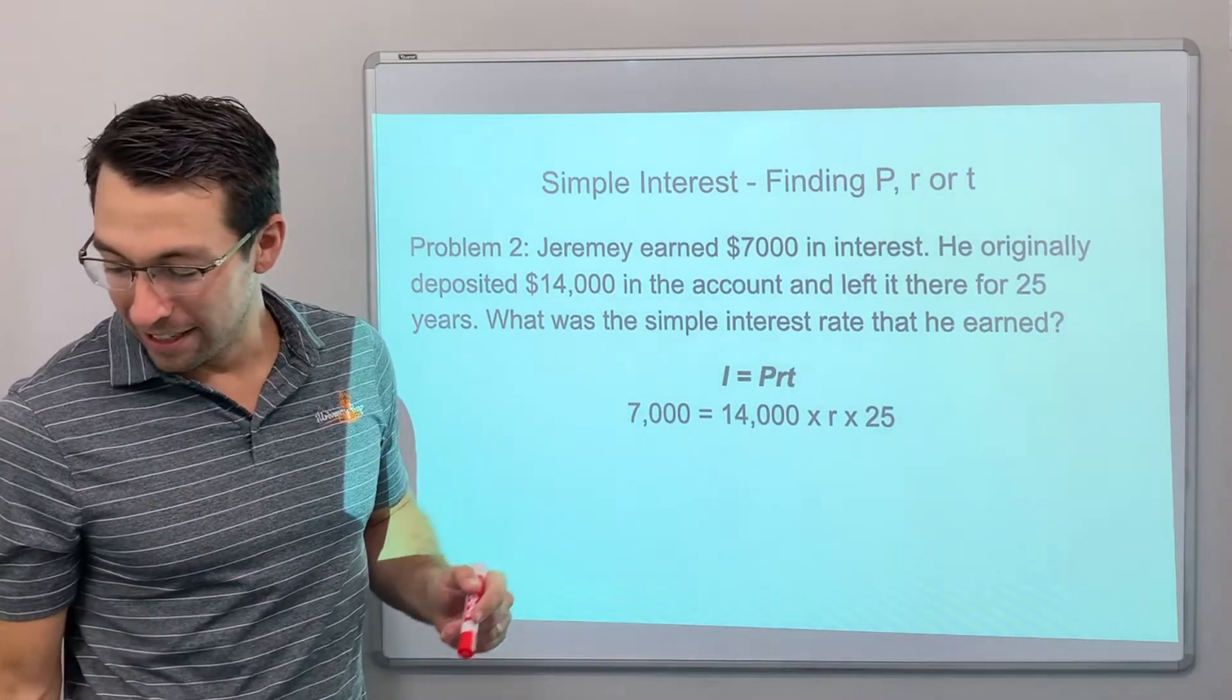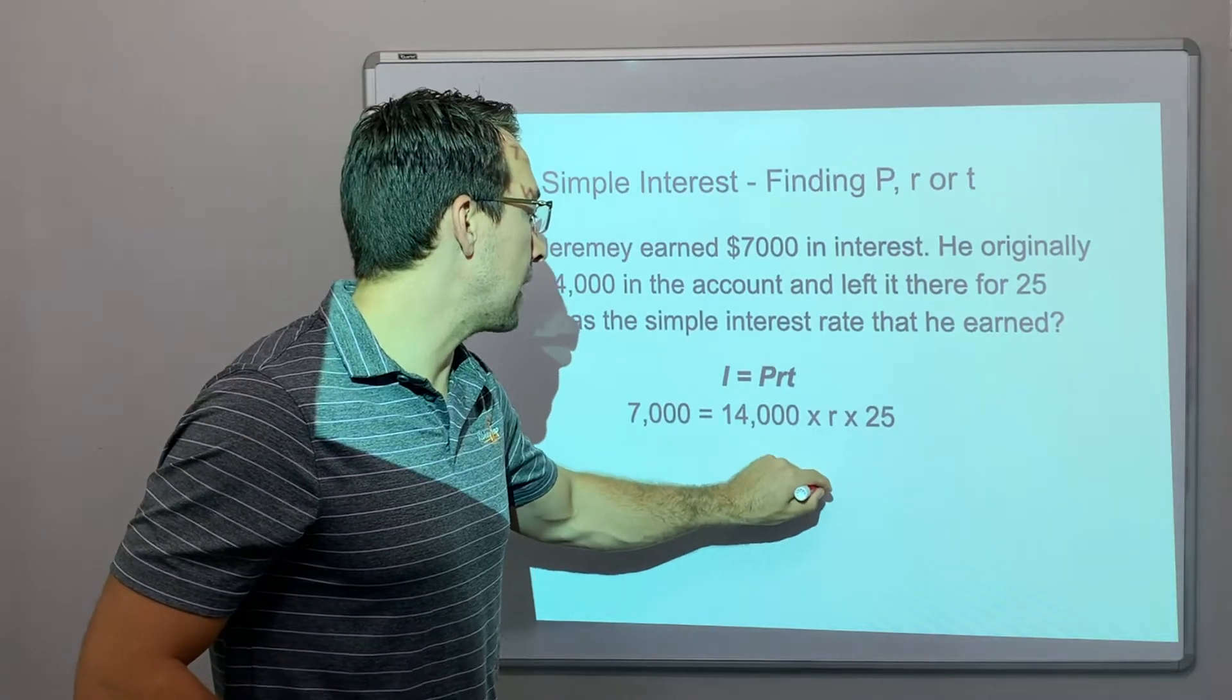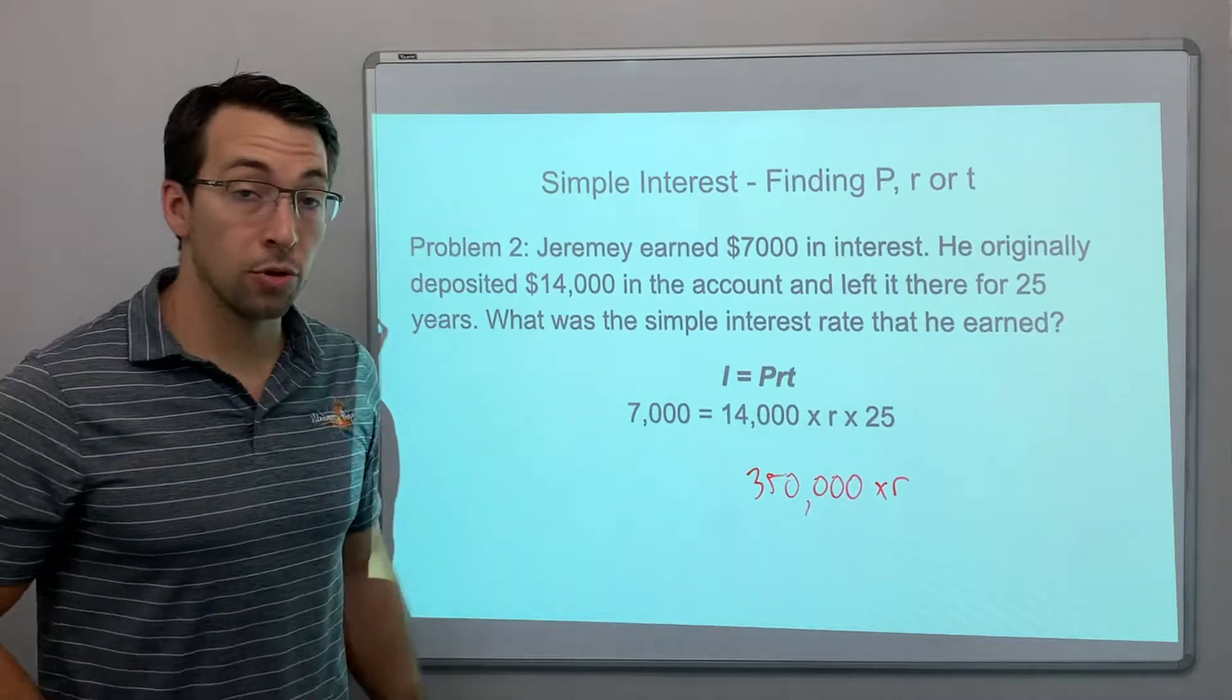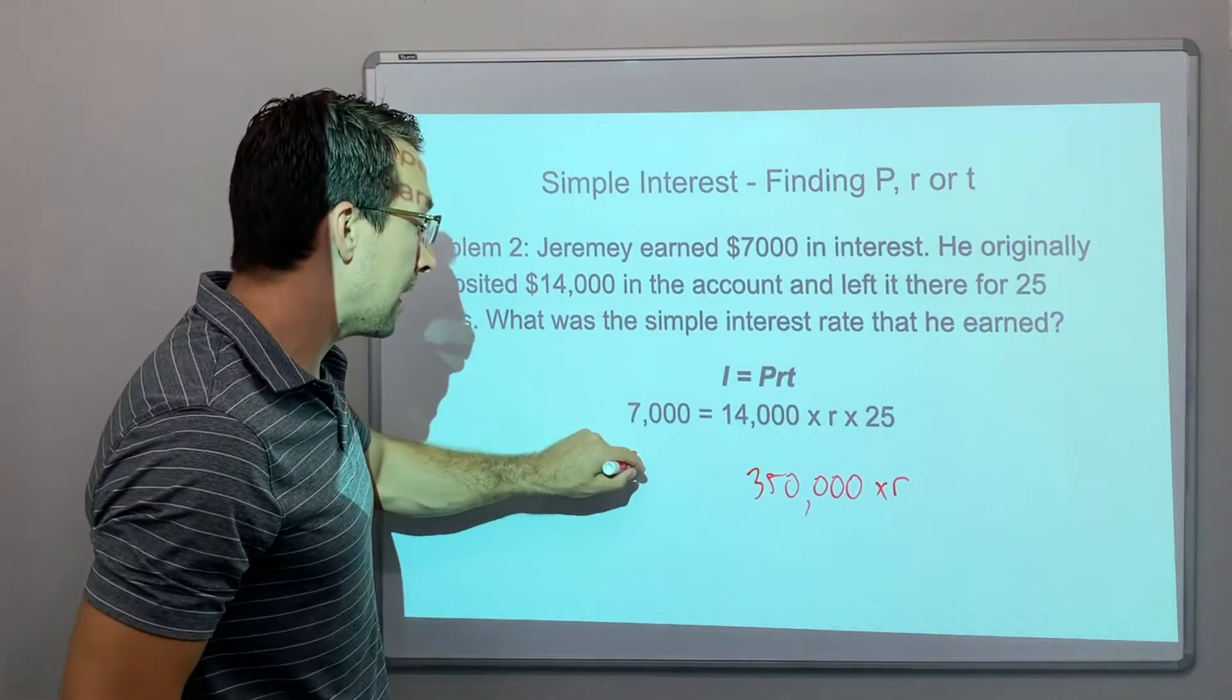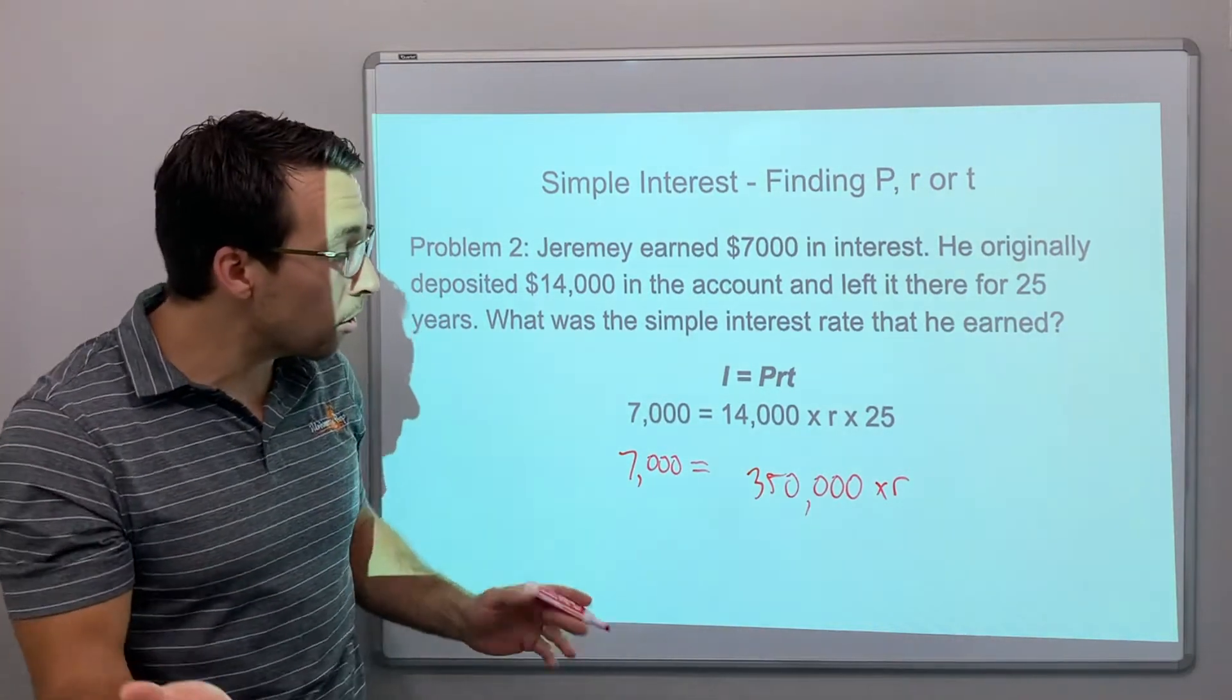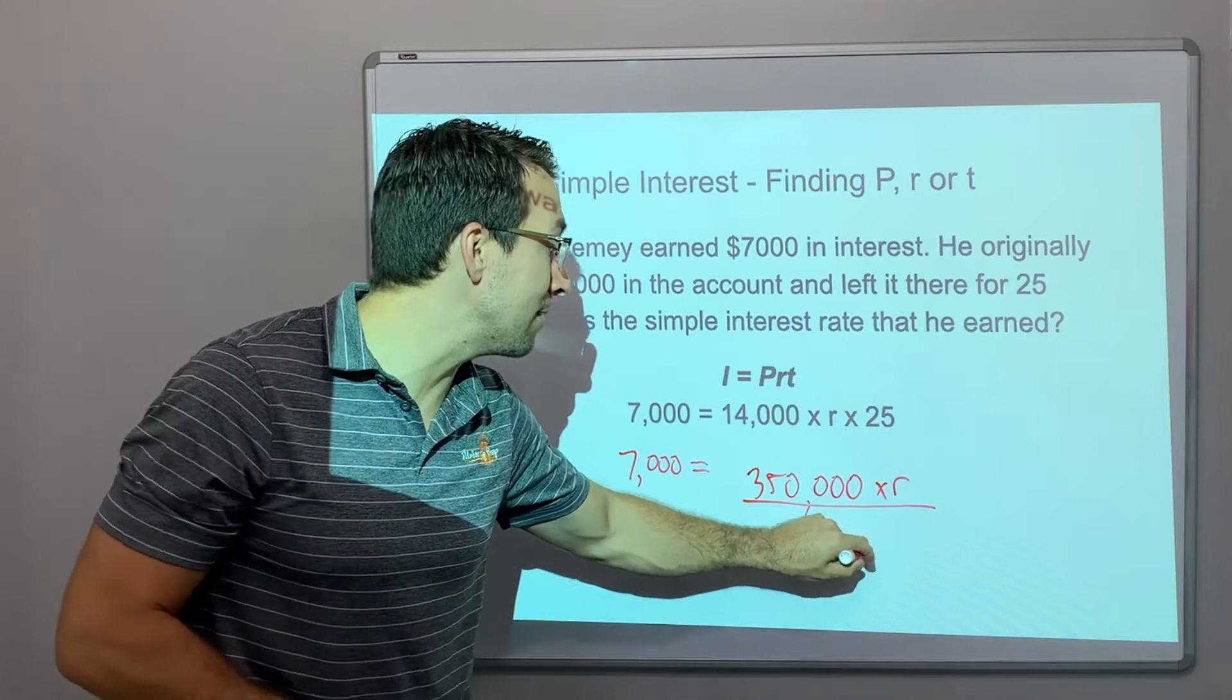All right, so 350,000 times R, right? So that's what we have left: 7,000 equals 350,000 times R. So what is R? We don't know. We have to divide by 350,000 to isolate the variable.